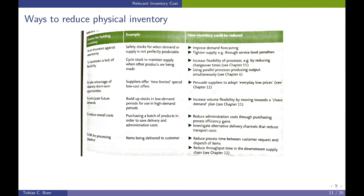Now, what are some ways to reduce physical inventory? Let's pick the first reason why we hold inventory: as an insurance against uncertainty. For example, safety stocks for when demand or supply is not perfectly predictable.